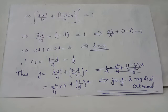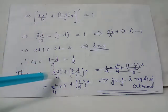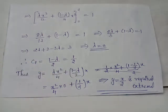Substituting λ = 0 into y = (λ/4)x² + (1 − λ/2)x gives y = (1/2)x. Thus the required extremal that extremizes the functional I is y = x/2.